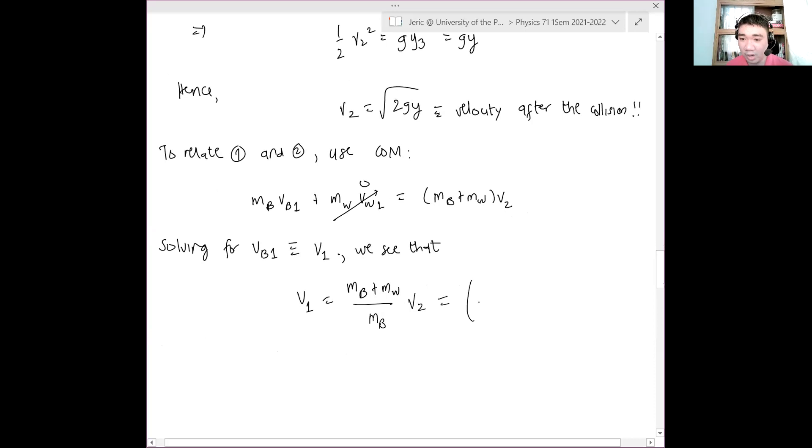V1 is simply MB plus MW over MB multiplied by V2, which is just equal to the quantity one plus MW over MB multiplied by square root of 2gY. This is just the initial velocity of the bullet before the collision.